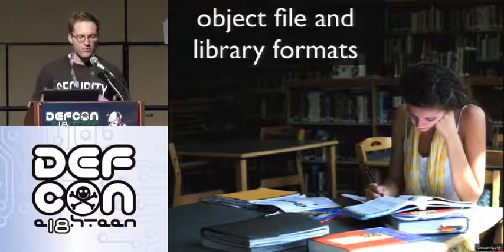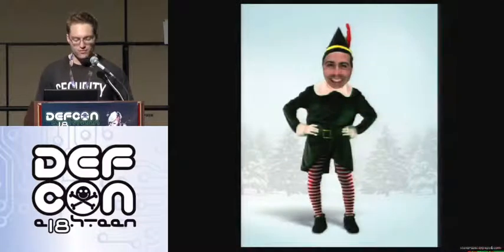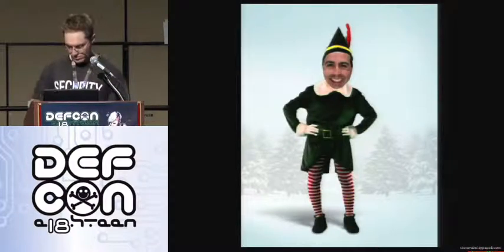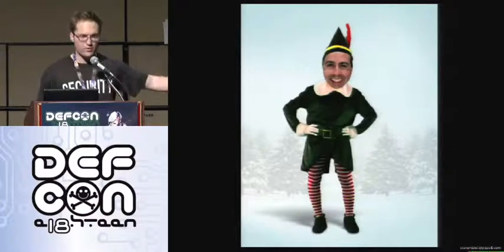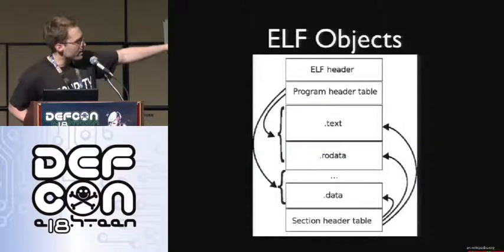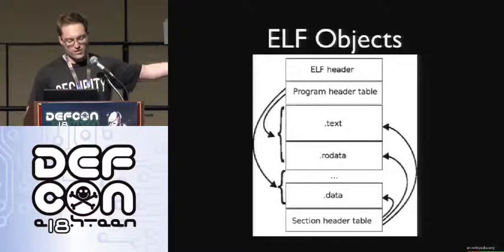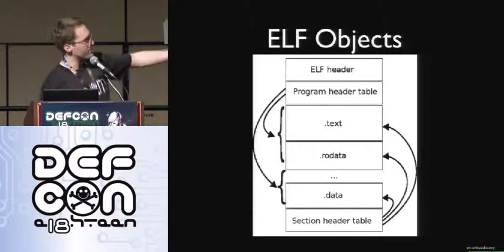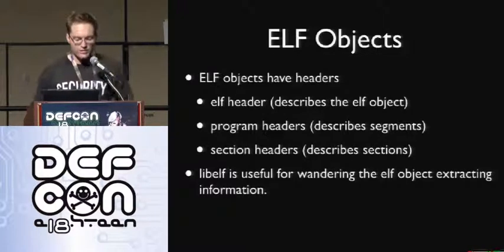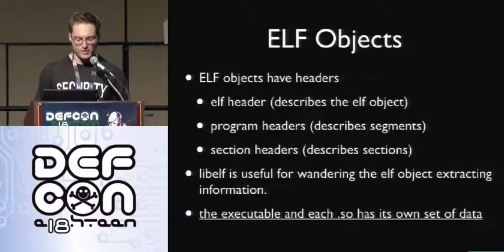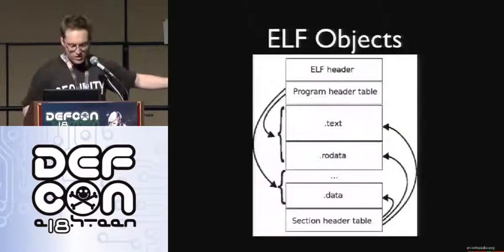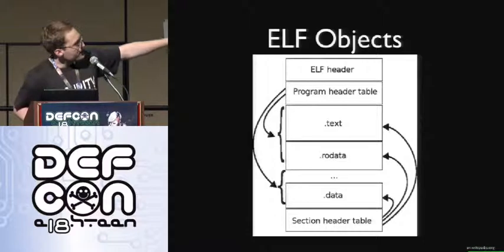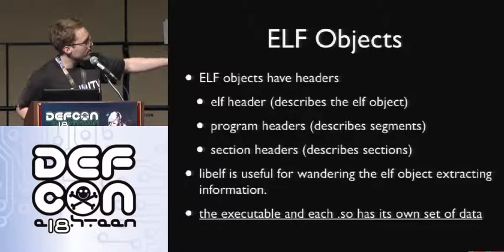The big thing we need to know more about is object file and library formats, and we care about two of them. The first is ELF — the Executable and Linkable Format. This was chosen as a standard format in the System V ABI for Unix and Unix-like operating systems. It starts with an ELF header, a program header table, various sections like the text section and RO data section, and then a section header table at the bottom. The program header table indexes different segments; segments contain sections. You can use a library like libelf to help you wander through an ELF object extracting useful information. Each executable and shared object has its own set of data — that will be important later.